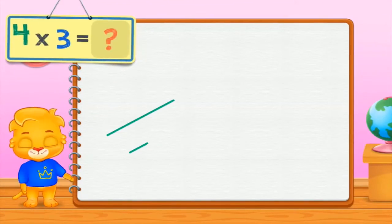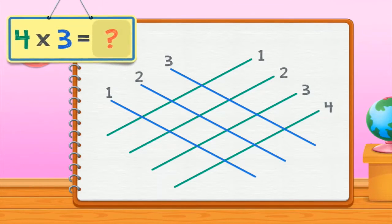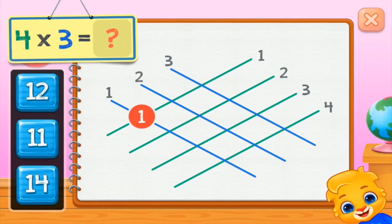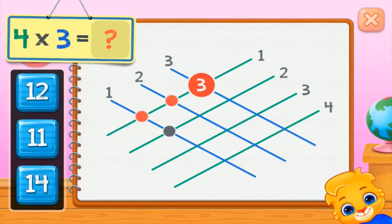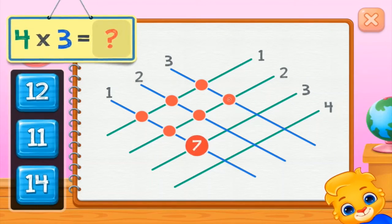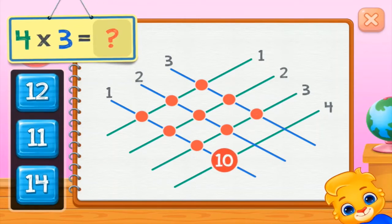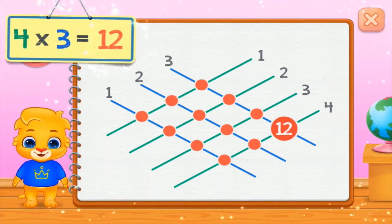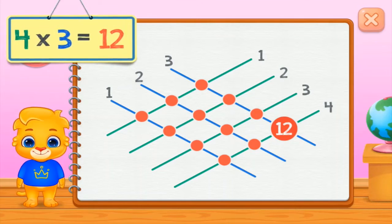4 times 3 equals... 1, 2, 3, 4, 5, 6, 7, 8, 9, 10, 11, 12. 4 times 3 equals 12.